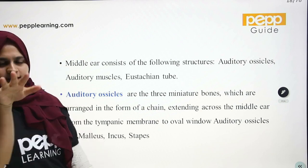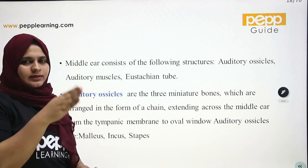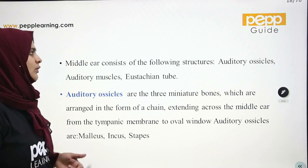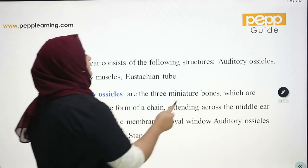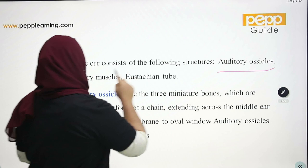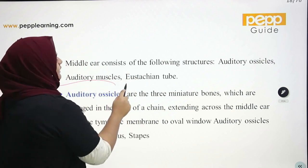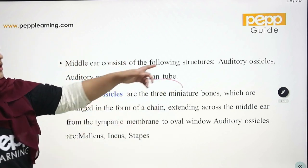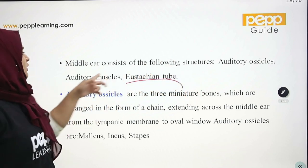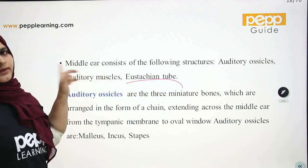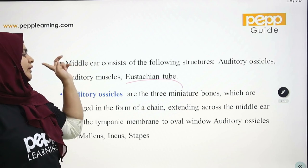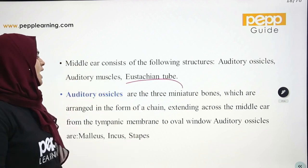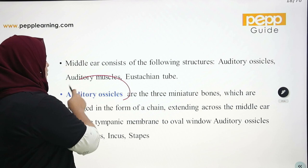How do we look at the middle ear? The tympanic membrane is the starting point. The middle ear contains auditory ossicles, auditory muscles, and the eustachian tube.